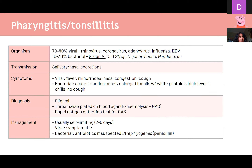Pharyngitis/tonsillitis is mostly viral but can be bacterial. If bacterial, we're most concerned about group A strep, the most common bacterial cause, which has serious complications. Viral presentation includes fever, runny nose, nasal congestion, and cough. Bacterial presentation includes enlarged tonsils, white pustular lesions on the tonsils, and notably no cough. You can diagnose clinically; if suspecting group A strep, do a throat swab on blood agar to look for beta hemolysis, or a rapid antigen detection test. Management is symptomatic unless strep pyogenes is suspected, in which case give penicillin.